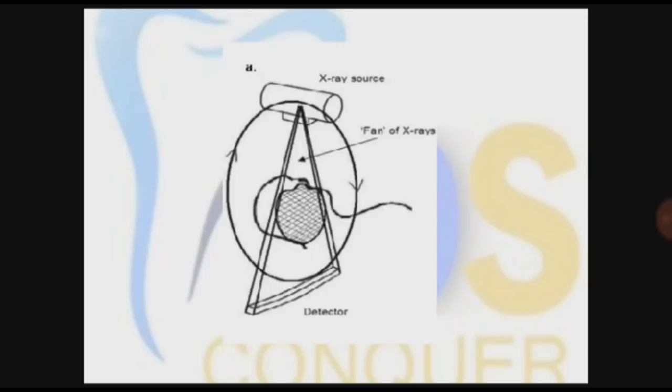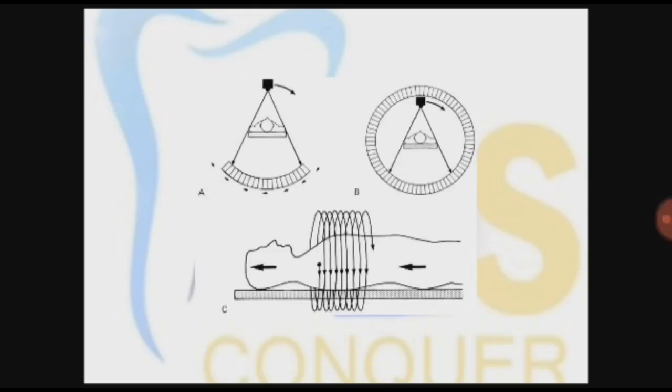This picture shows the third generation. Earlier CT machines had the tube head moving and the detectors also moving because there was not a complete circle of detectors, only an arc, so it was also moving. Diagram B shows the fourth generation of CT in which detectors are a complete circle, so detectors don't have to move. Only the tube head is moving.